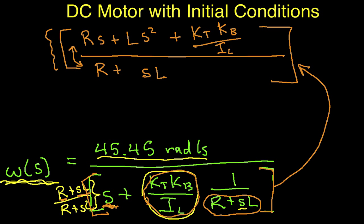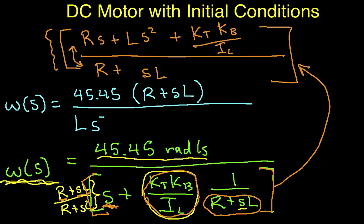And when I do that then, I get that omega of S is equal to 45.45 times R plus S times L over L times S squared, plus R times S plus KT KB over IL. Okay, so there you have it. I have now a ratio of two polynomials as my expression for omega S.